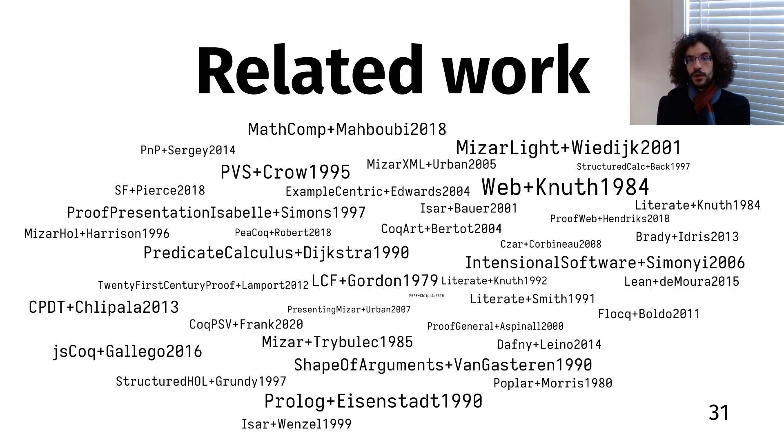It's hard to do justice to all the related work in this area in just a few minutes, so I'll simply say that Alectryon builds on decades of great ideas for making programs and proofs more understandable, all the way from a paper in 1980 co-authored by Eric Schmidt and Phil Wadler, to PhD theses written just a year ago. There's 60 citations and three pages of related work in the paper. If you're curious about the history of this stuff, you really should have a look.